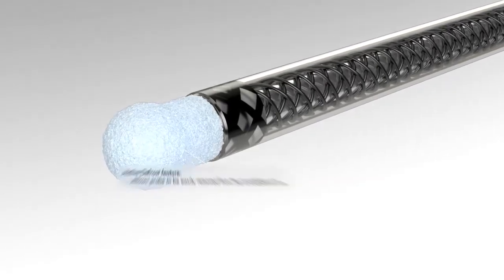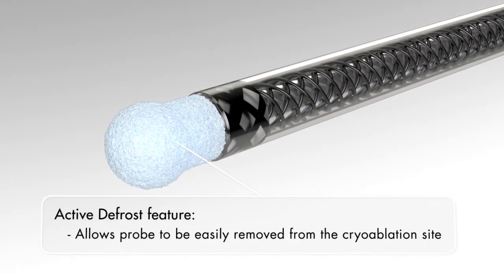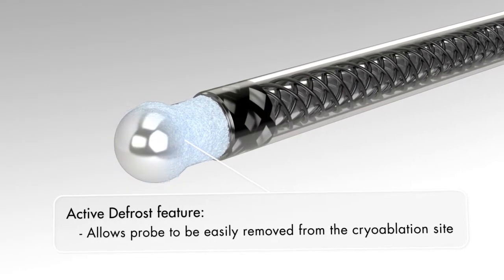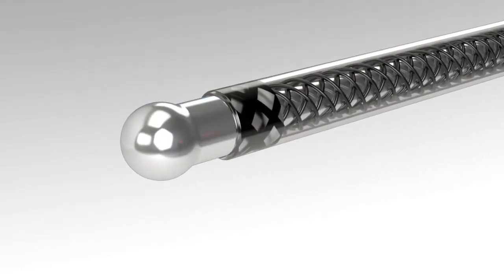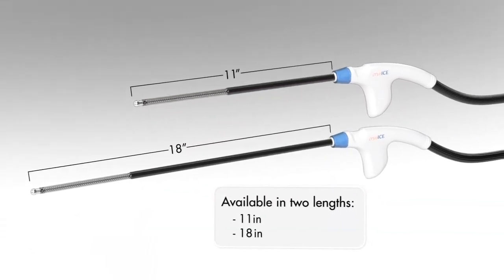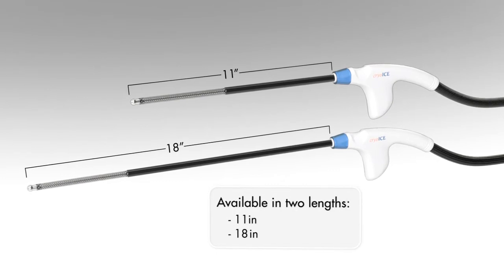The Cryo Ice family of probes includes an active defrost feature which allows the probe to be easily removed from the cryo ablation site. The Cryosphere probe is available in two lengths: 11 inches, in addition to an 18 inch version for applications where a longer probe is needed.